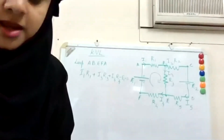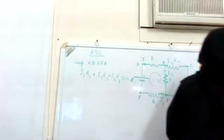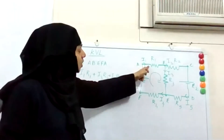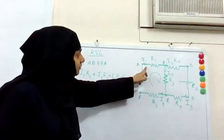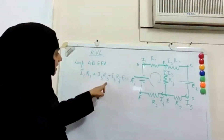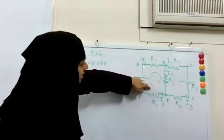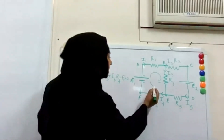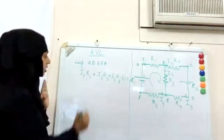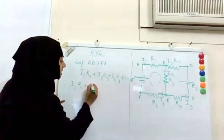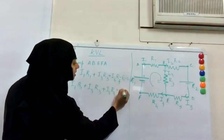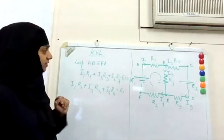Let me explain the equation again. First we take a loop and go along it noting current and resistance. Going here: I1·R1. Same direction: plus I3·R3. Same direction: plus I4·R4. Then I saw the negative terminal first, so minus E1 equals zero. This can be rewritten as I1·R1 plus I3·R3 plus I4·R4 equals E1, by moving minus E1 to the other side.